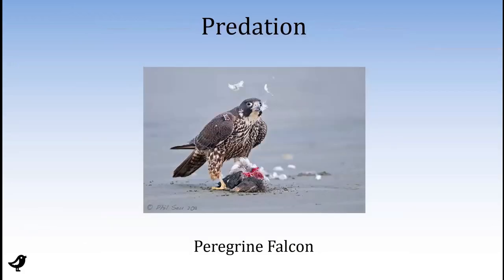Predation obviously is a big factor. There are hundreds of species of raptors eating other birds, eating other mammals, eating lizards. A lot of raptors are actually insect eaters — they'll grab big moths and beetles flying in the sky. Especially smaller things like kestrels will eat quite a few insects, but these are all predators preying on other animals.